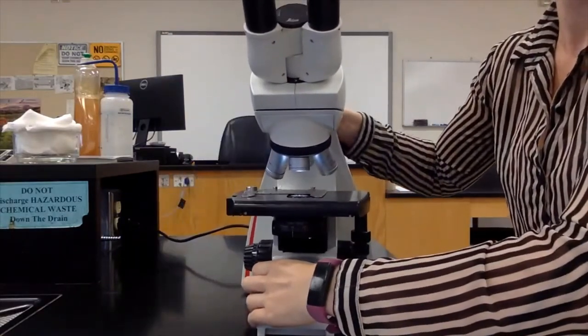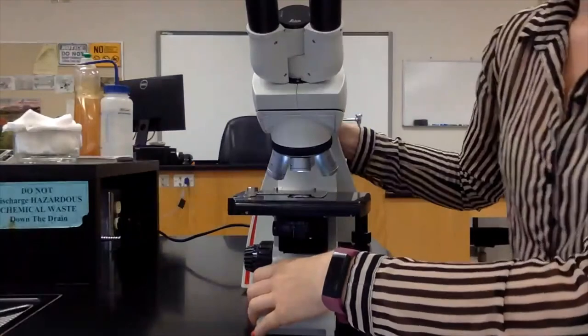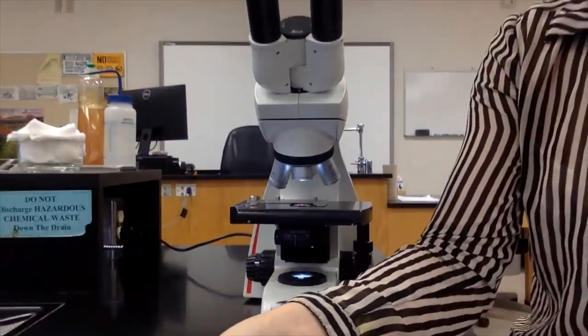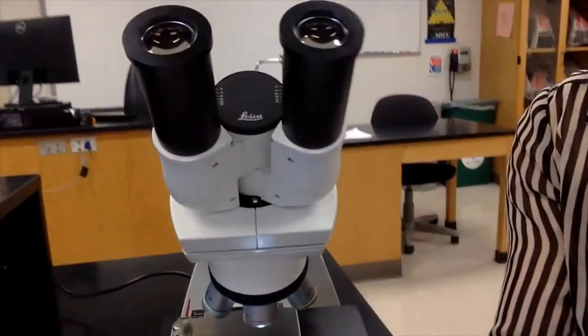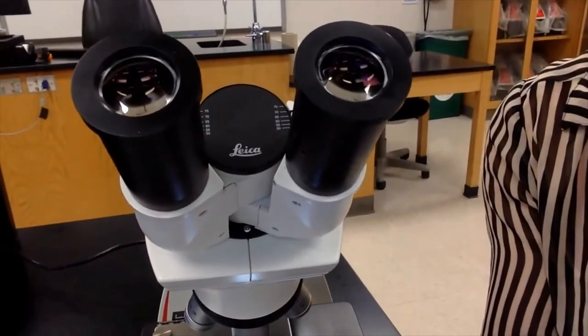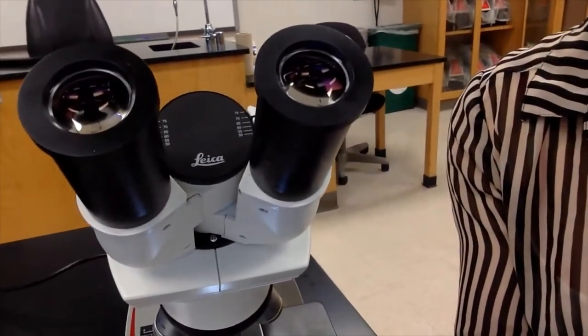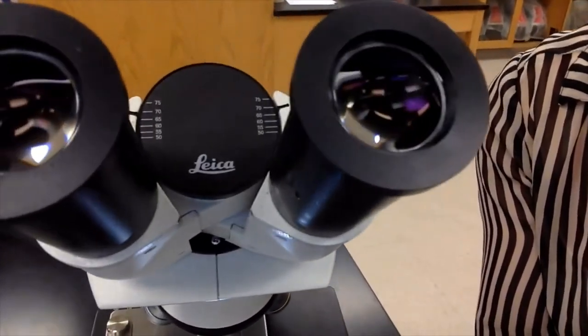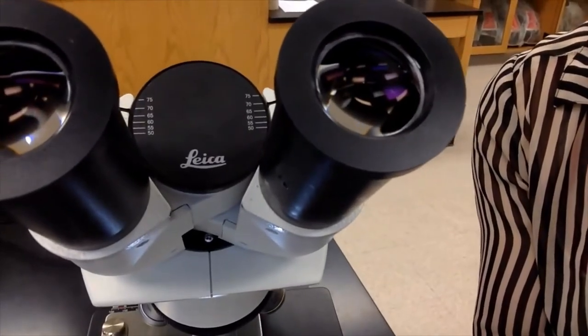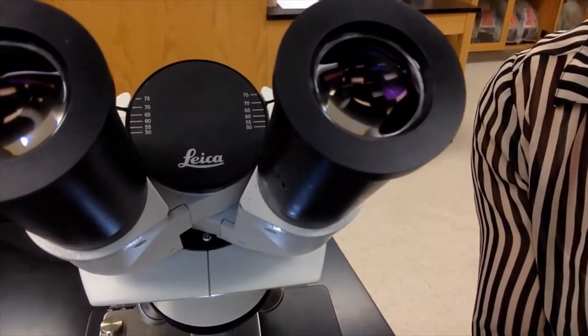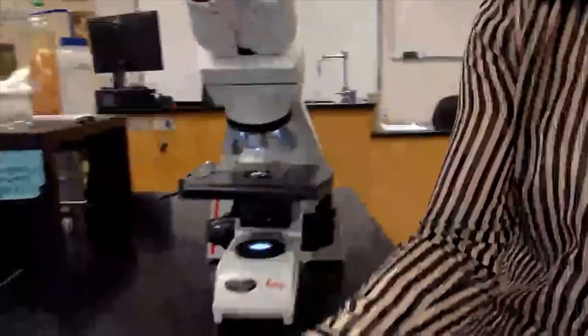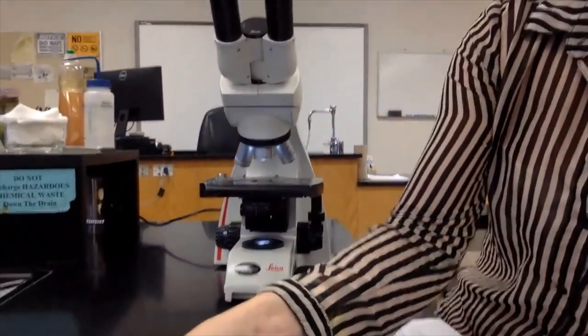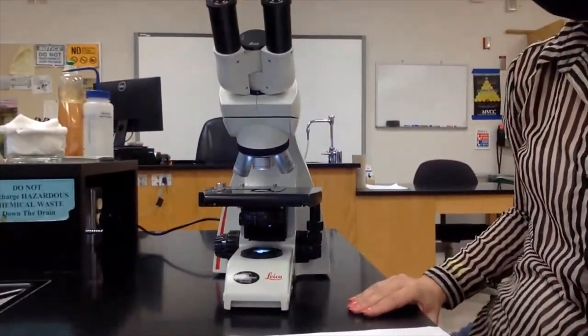You can adjust the interpupillary distance by gently sliding the ocular lenses like this. Once you can see through both of the lenses, note the scale here. This measures your interpupillary distance. It's a good idea to write this number down. That way you can set up any microscope more quickly.